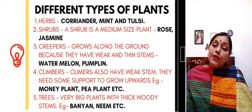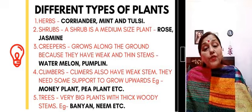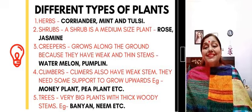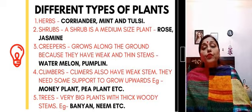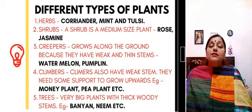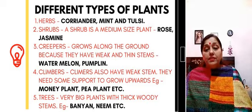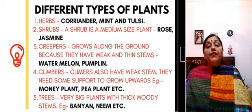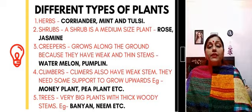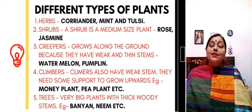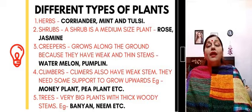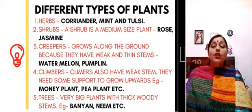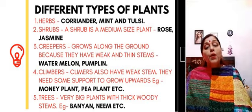Plants make their own food. How do they make their food? Plants make their own food with the help of sunlight, air, water, and a green pigment in their leaves known as chlorophyll. The leaves of the plants are known as the kitchen of the plant.